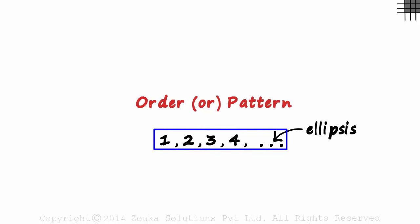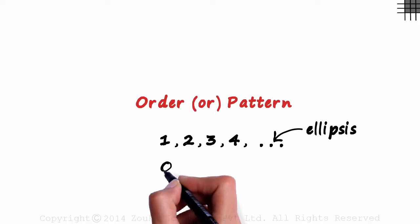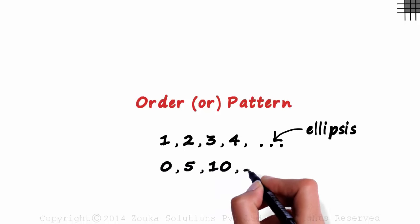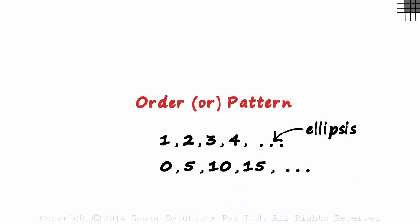The numbers don't necessarily have to be continuous to be a sequence. A list like 0, 5, 10, 15 and so on are also set to be in a sequence. What's the pattern here? Every number is increased by 5 to get the next number. A constant increment of 5.